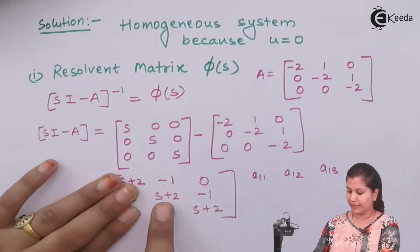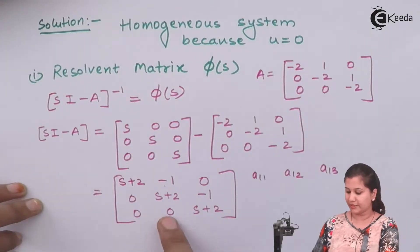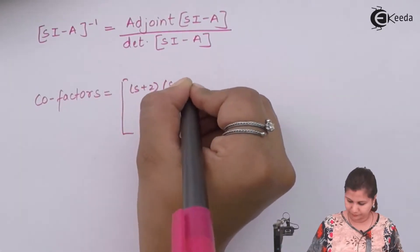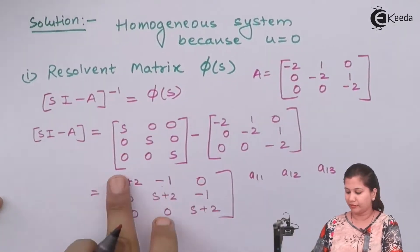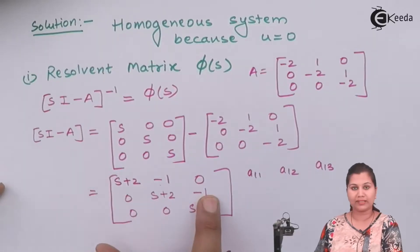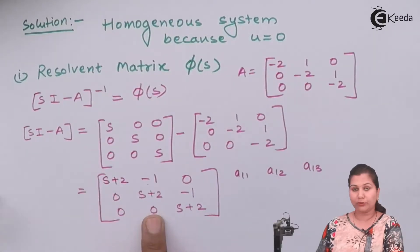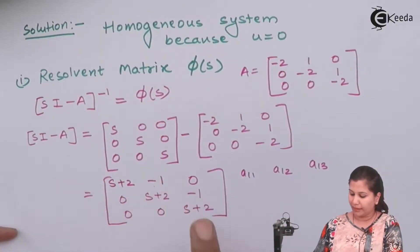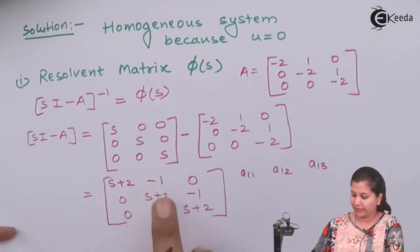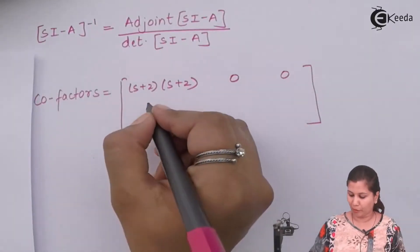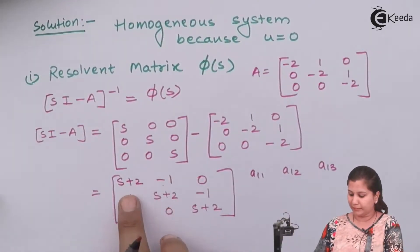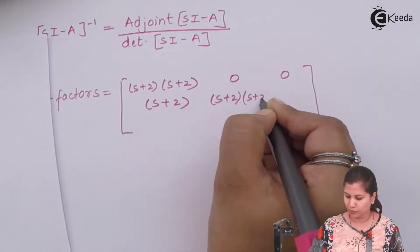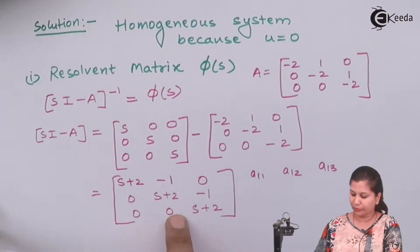For the first element (A₁₁): hiding its row and column gives (s+2)(s+2) − 0×(−1), so the cofactor is (s+2)². For A₁₂: hiding its row and column gives 0×(s+2) − 0×(−1) = 0. For A₁₃: 0×0 − 0×(s+2) = 0. For the second row first element (A₂₁): we get −(s+2) but must change the sign, so it becomes +(s+2). For the middle element A₂₂: (s+2)(s+2) − 0×0 = (s+2)². For A₂₃: 0×(s+2) − 0×something = 0.